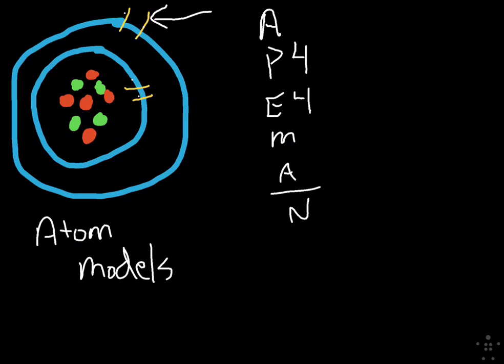Whatever the proton count is, that's the atomic number. Knowing the atomic number tells us what atom we're working with, because atomic number on the periodic table, four, is beryllium.